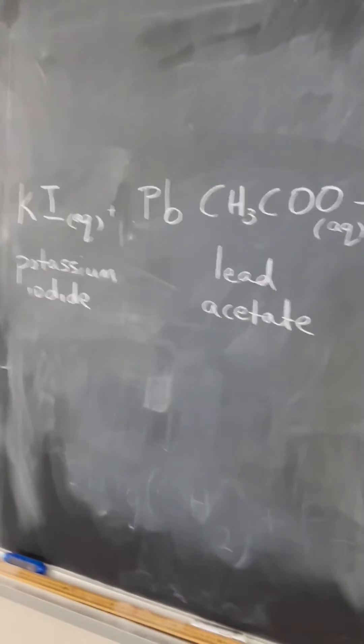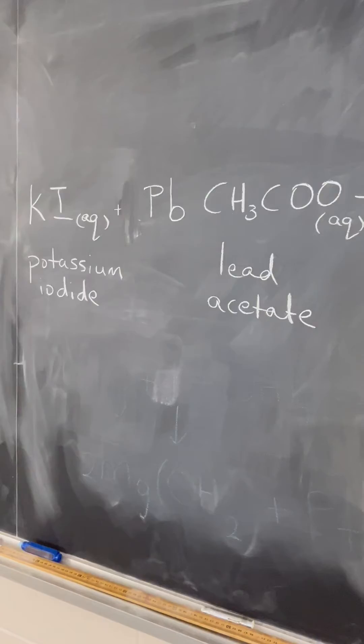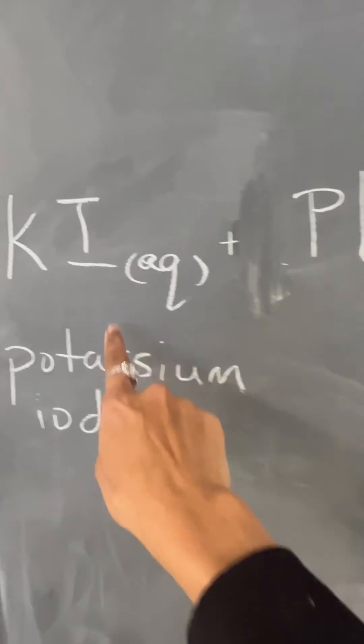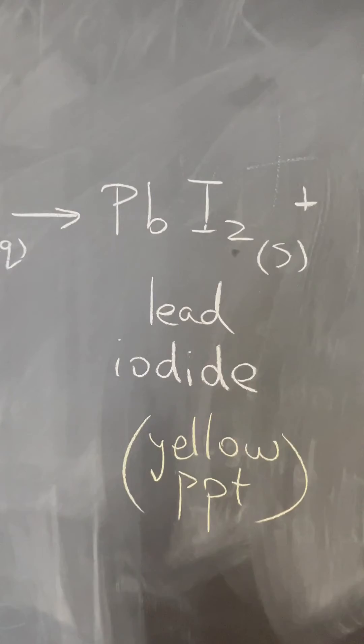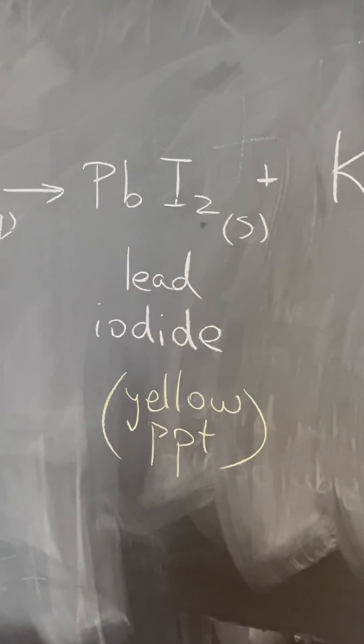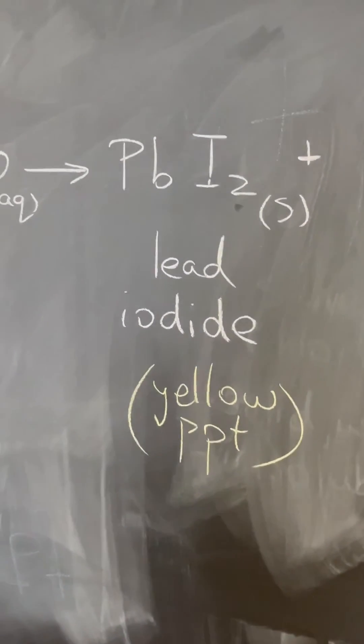Potassium iodide reacting with lead acetate, and these two combine to form your lead iodide, which was a yellow precipitate that we saw. It's solid and insoluble in water.